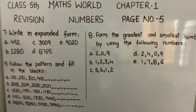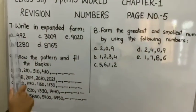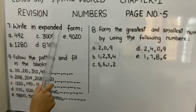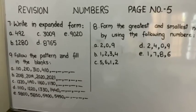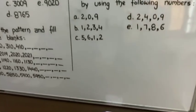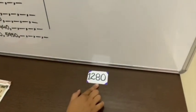Now have a look on board. Question number 7 is, write in expanded form. So we will solve part B. Statement is 1280.